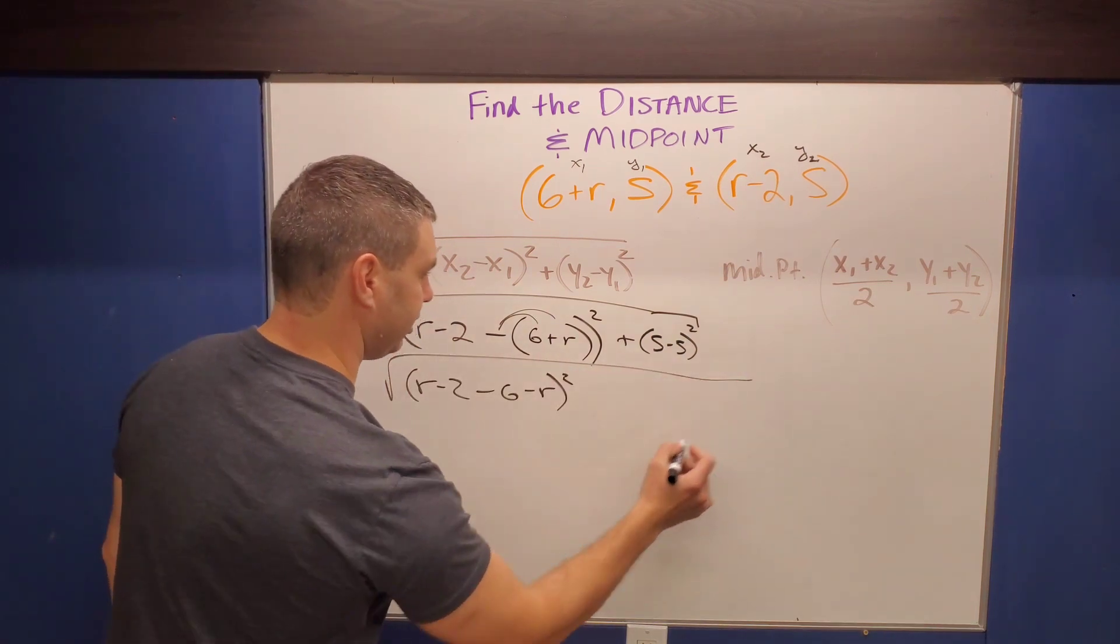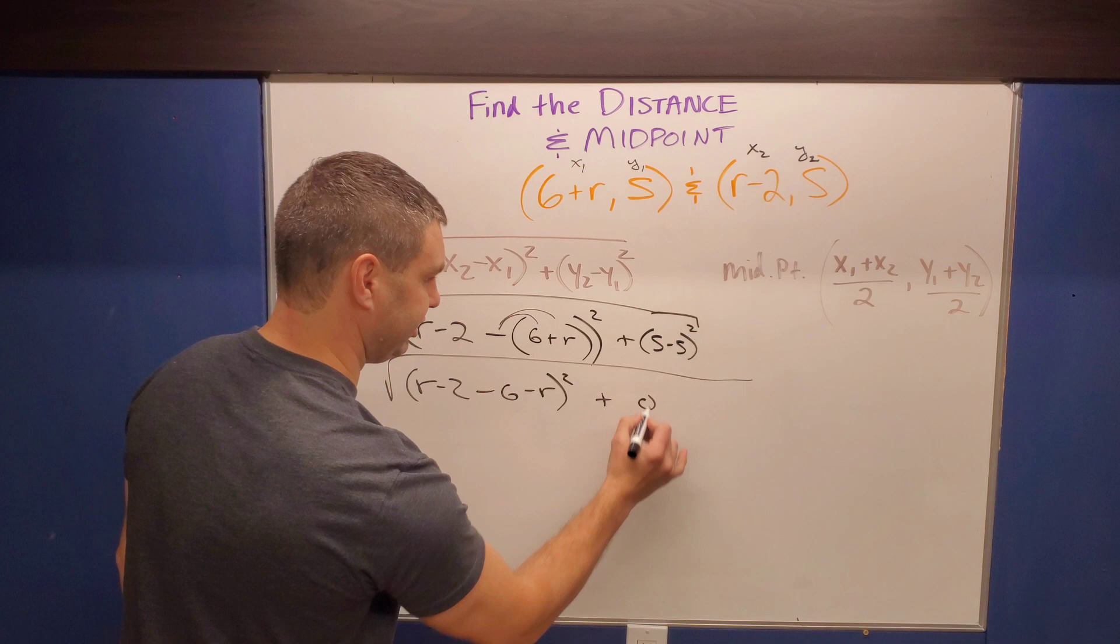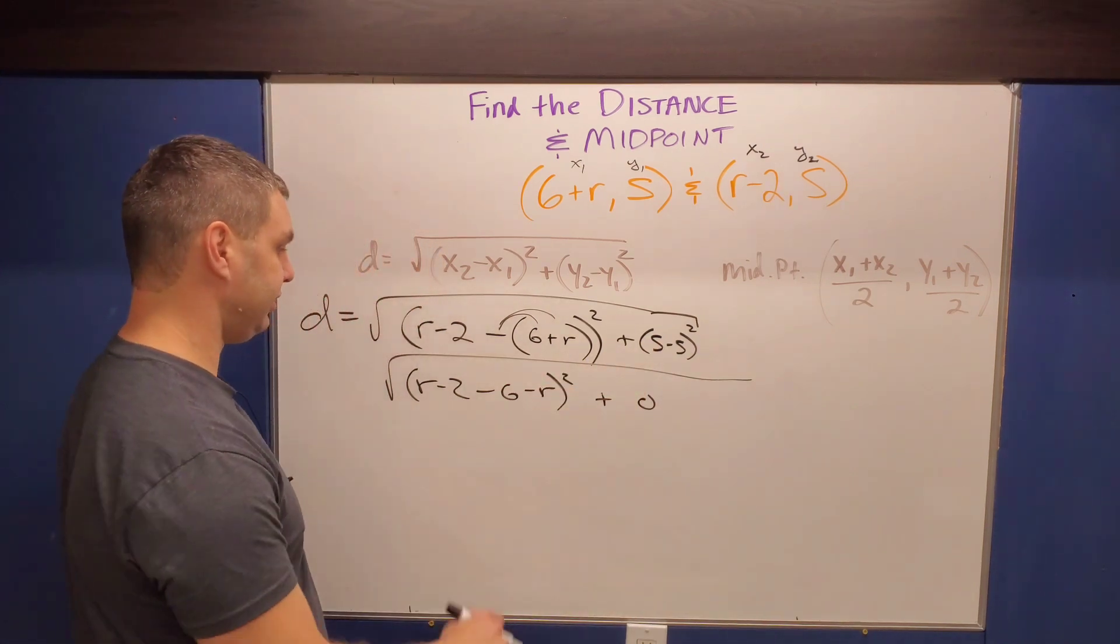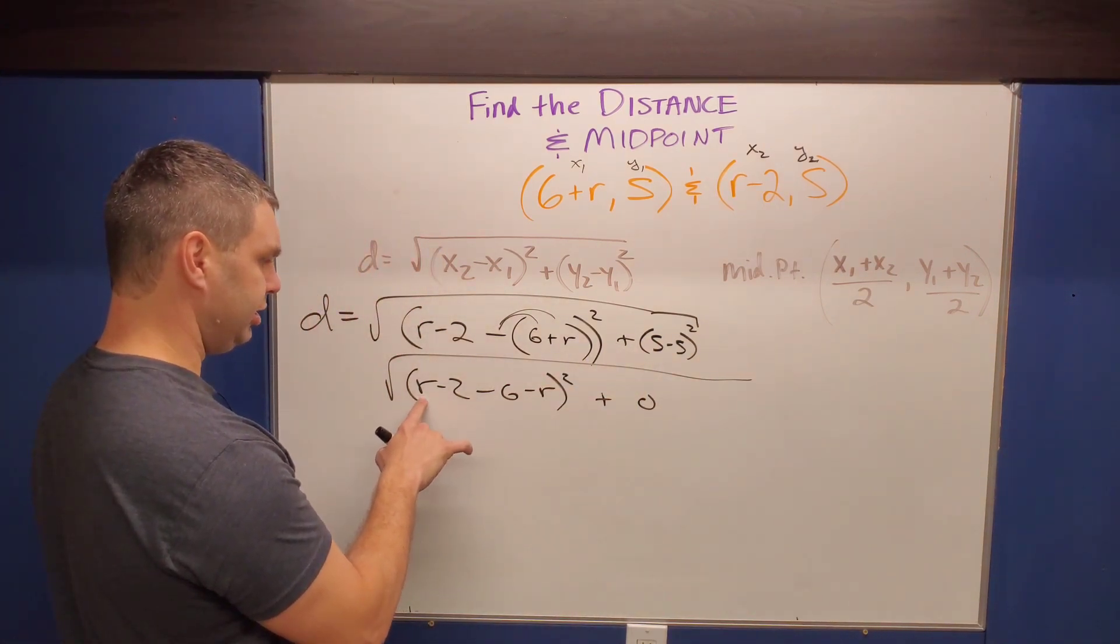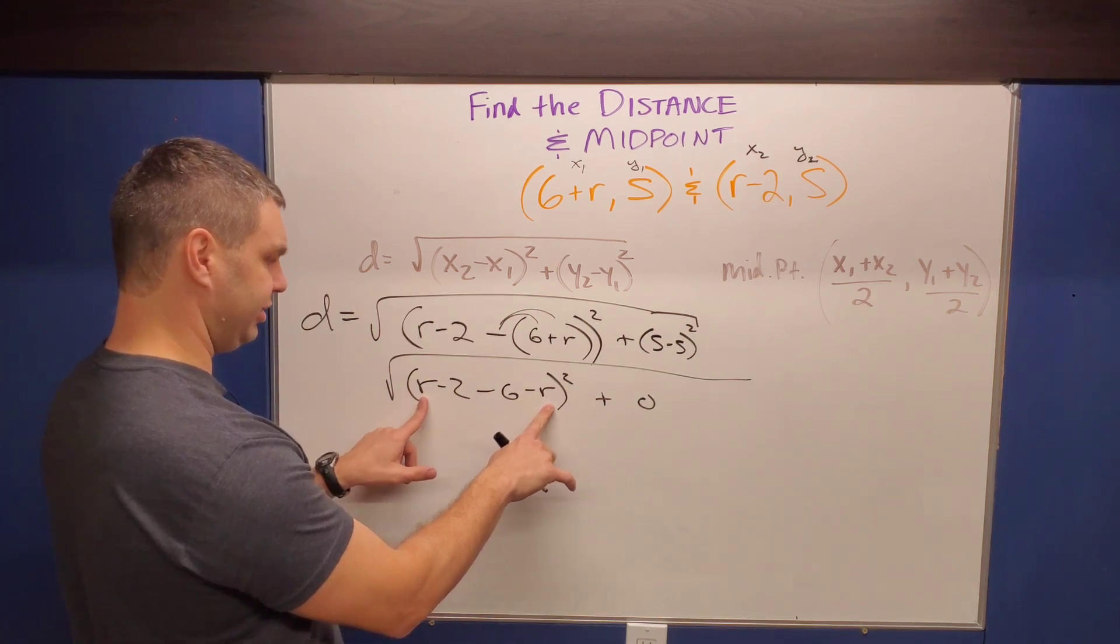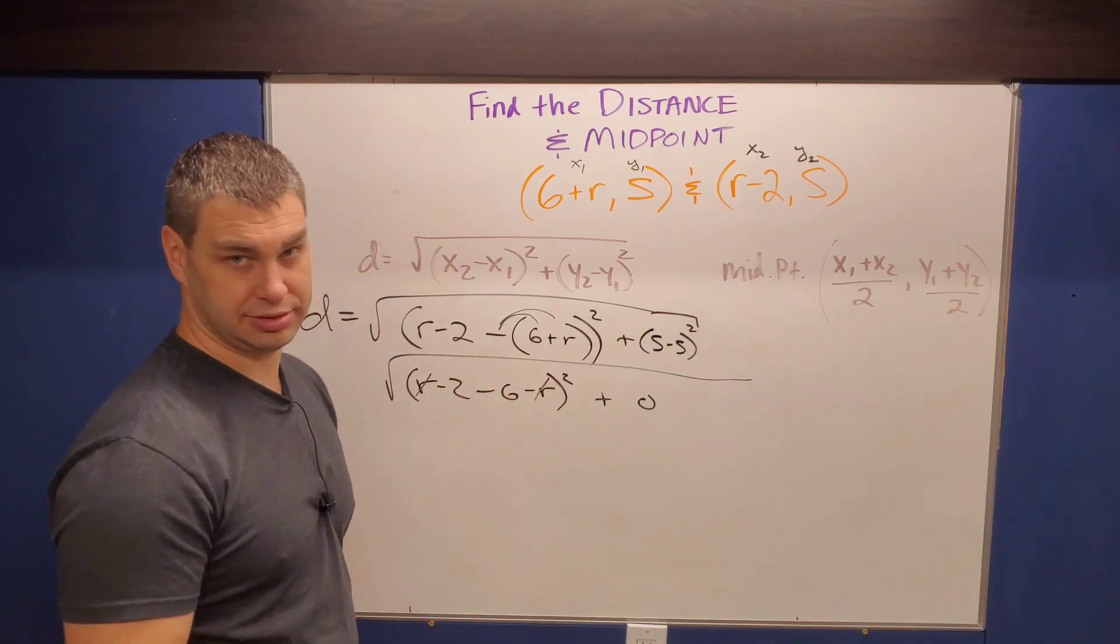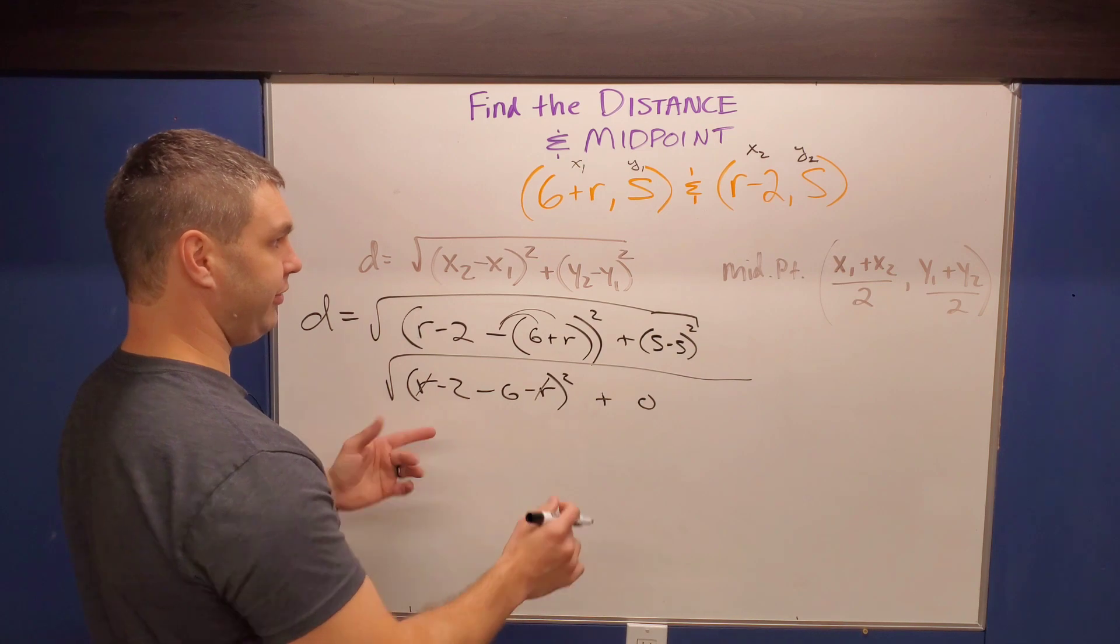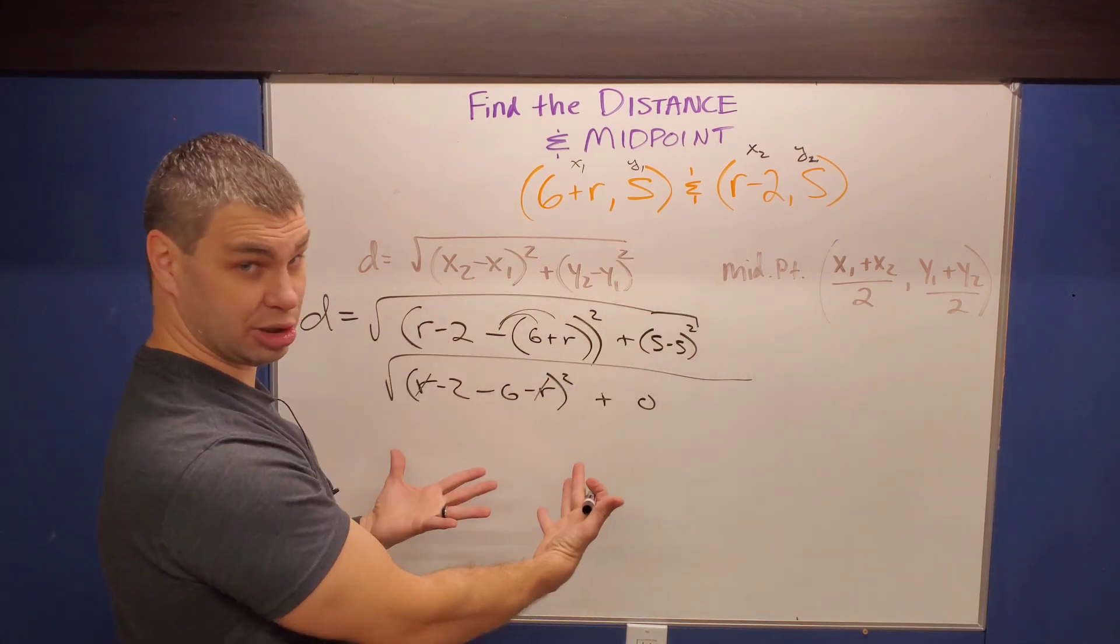And that's still all squared. And let me put my big square roots. We can say just plus zero over there, and then that will go away after this next line. But what's going to happen here? Well, R minus R, if I combine like terms, R minus R also cancels.